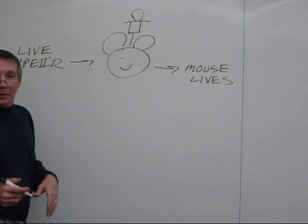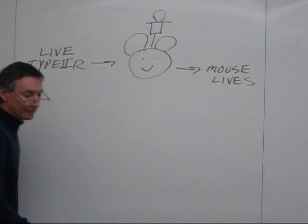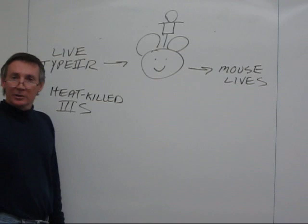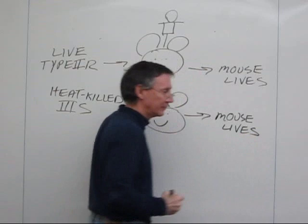Then he said, okay, if we had the S-type cells, you can heat-kill those cells, and that won't cause disease. So he takes heat-killed 3S cells, for instance, and injects those into a mouse. Again, the mouse lives.